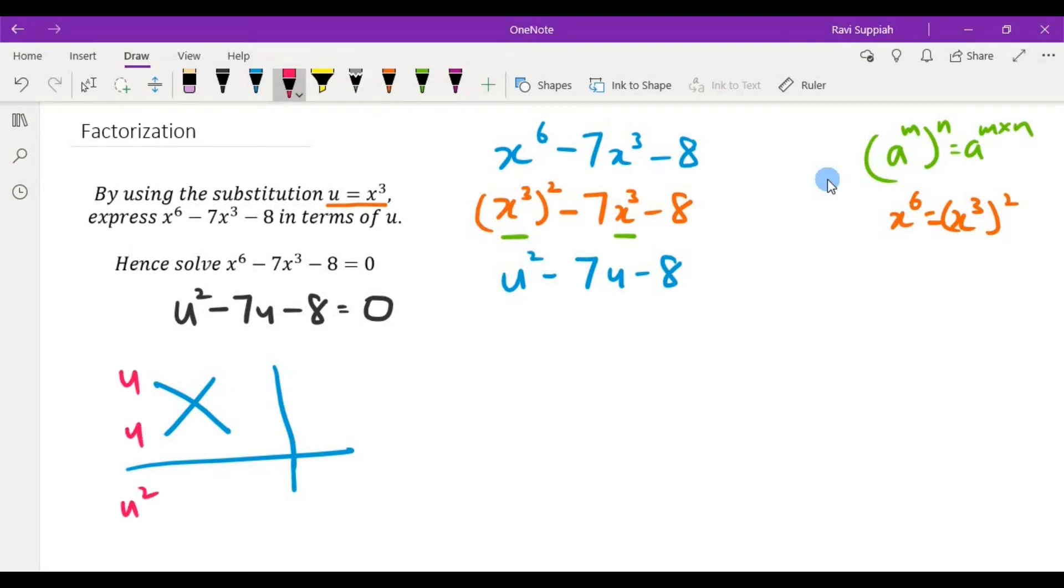So u and u would give me u squared. 8 and 1 would give me 8. I know I want a negative 8 but I will come back to that in a bit. u times 8 gives me 8u, u times 1 will give me u. What I want over here is negative 7u. In order to get a negative 7, it must be negative 8 plus 1. So I put a negative here, I put a negative here and this is a positive. Negative and positive would be negative 8 which is also what I see here. So what we have now is this factorizes to u minus 8 and u plus 1 equals 0.